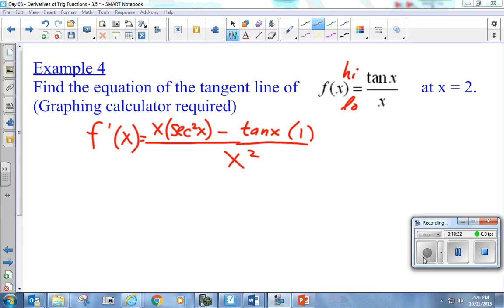Now, they want to know at two. Two times secant squared of two minus the tan of two, all over two squared.